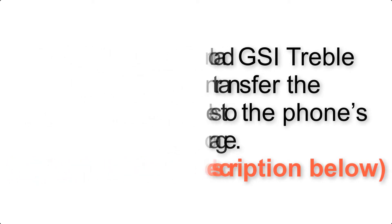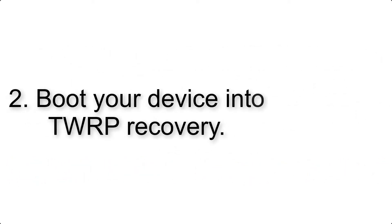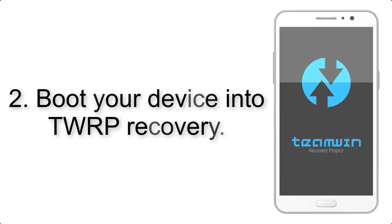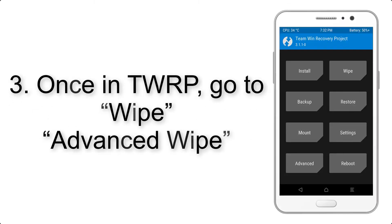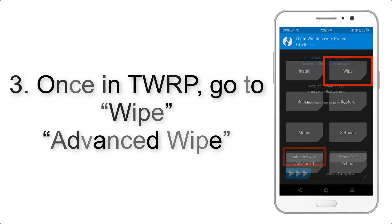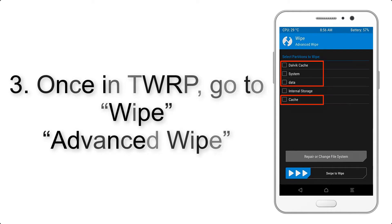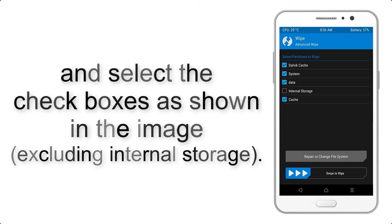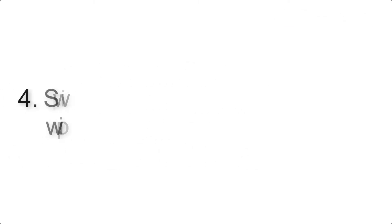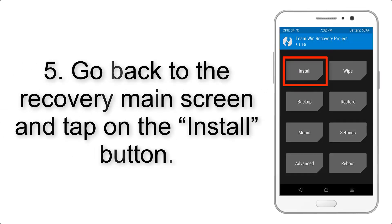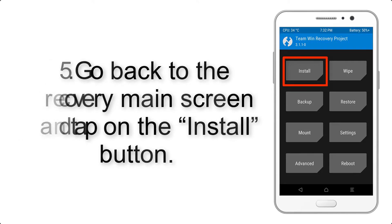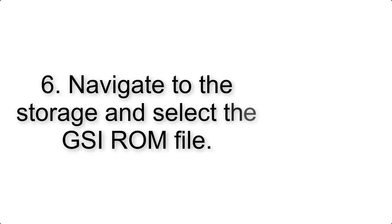Step 2: Boot your device into TWRP recovery. Once in TWRP, click on Wipe, then Advanced Wipe, and select the checkboxes as shown in the image, excluding internal storage. Step 4: Swipe the button to wipe the device. Step 5: Go back to the recovery main screen and tap on the Install button.